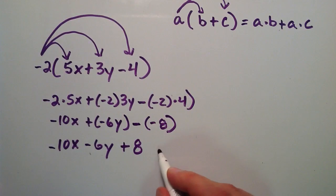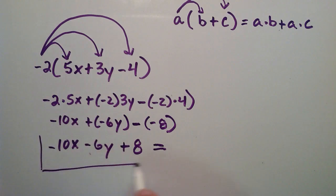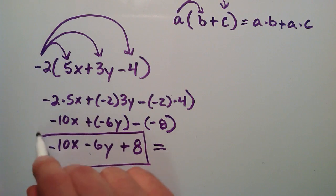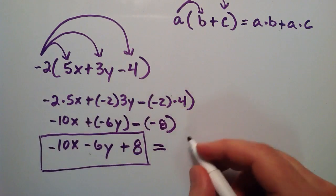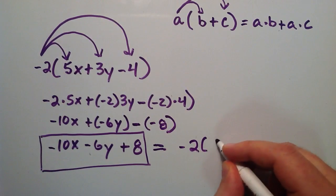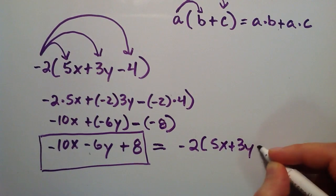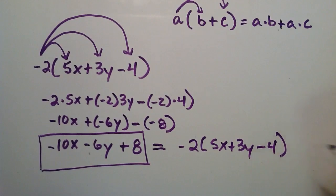So we've simplified the expression above by using an extended form of the distributive property. And so we basically have shown that this right here is equivalent to what I wrote up top. Negative 2 times 5X plus 3Y minus 4. So that's how you can use the distributive property to simplify variable expressions.